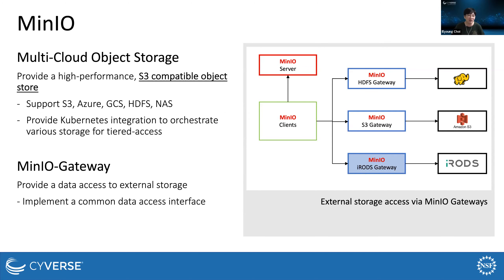What is MinIO? MinIO is a multi-cloud object storage. MinIO provides a high-performance S3-compatible object store. It currently supports various cloud storage such as S3, Azure, and GCS, and so on. It also supports network storage such as HDFS and NAS. MinIO also provides Kubernetes integration to orchestrate various storage for tiered access. MinIO consists of three components: MinIO Server, MinIO Gateway, and MinIO Client.